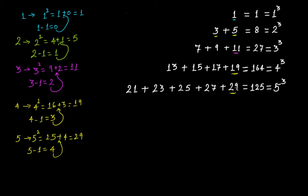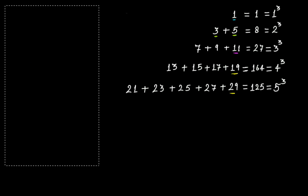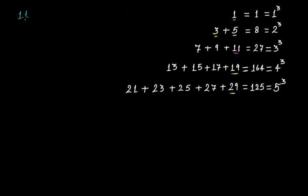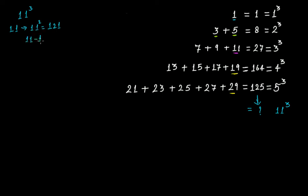So if someone asks what will be 11 cubed using this pattern, here's how: 11 squared is 121. Eleven minus one is 10. Add 10 to 121 — you get 131. So 131 is the largest odd number in the sequence for 11 cubed.